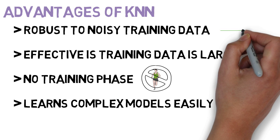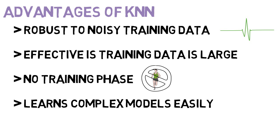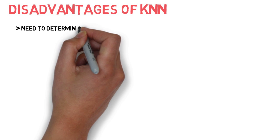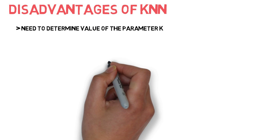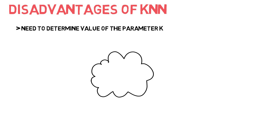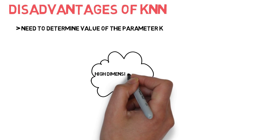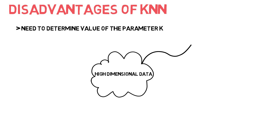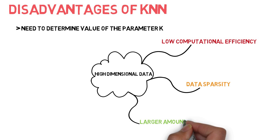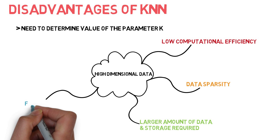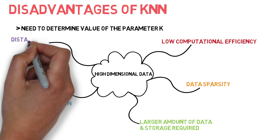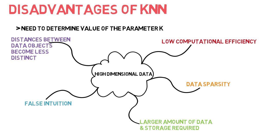The disadvantages of KNN, however, is that we need to determine the value of the parameter K, which is the number of nearest neighbors. It is hard to apply in high dimensions. When dimension of the data is high, these things happen: low computational efficiency, data sparsity, large amounts of data and storage is required, we get a false intuition which means close nearest neighbors are not close anymore, and the distance between data objects becomes less distinct.